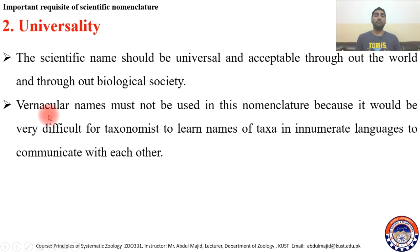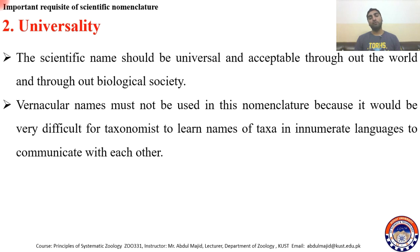Vernacular names or common names must not be used in nomenclature, because it would be very difficult for taxonomists to learn names in enumerate languages to communicate with each other. For example, if you want to communicate with a German scientist and you don't know the German name for dog or tomato, and when you talk to a Spanish person you don't know their name either — there are innumerable languages, so it's difficult to communicate. Therefore, vernacular names must not be used.